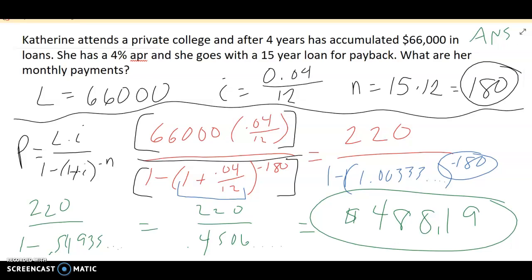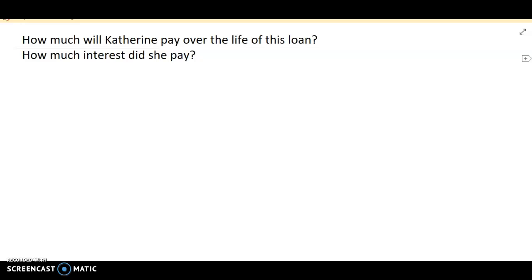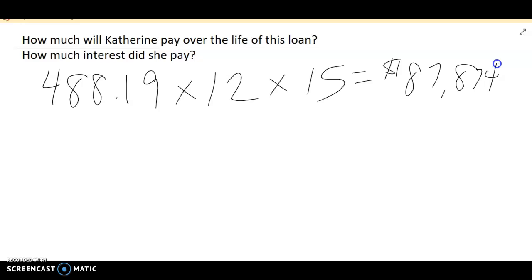Okay, back to Catherine. So Catherine's monthly payments are $488.19. So how much will Catherine pay back over the life of this loan? If she's paying $488.19 per month, that means 12 months a year, and we're doing 15 years in this loan. If I multiply those pieces together, I get $87,874.20.